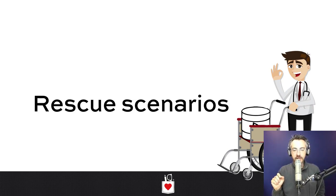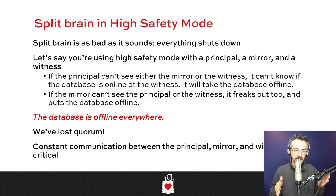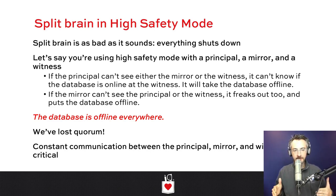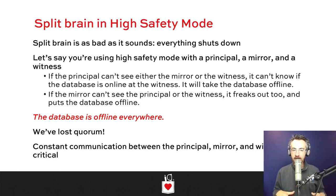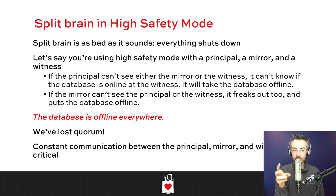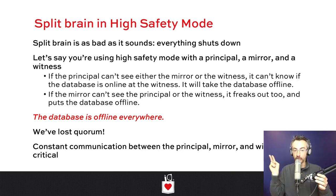Those are the setup things you need to do ahead of time. Now let's talk about what to do when things go wrong. The most common problem is split brain. In high safety mode — where every transaction on the principal is also written to the mirror before returning to the user — there's a possibility of split brain where everyone shuts down. If the principal can't see the witness or the mirror, and the mirror can't see the witness or the principal, everyone goes down. It's simple quorum — always just three voters — assuming you set up the witness.